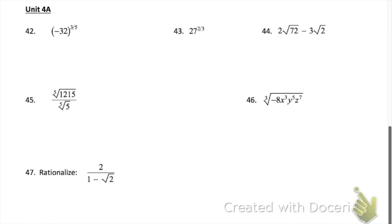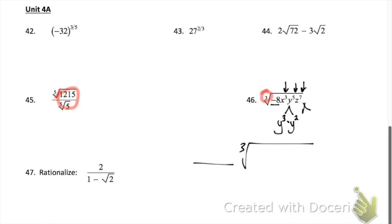Problem 45 — we're just dividing what's on the inside and then simplifying the fifth root. Problem 46 — start by taking the cube root of negative 8. Then with our exponents, check if the numbers are divisible by 3. If they are, divide them and bring them out. If not, break them apart into numbers that are divisible by 3. Part of your answer will be outside the cube root and part will be inside.